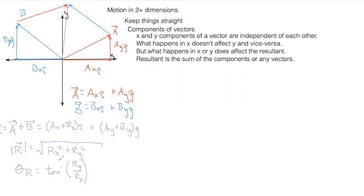The resultant is affected by both component X and component Y. But the X components are not affected by the Y components — the Y components stay with the Y components, the X components stay with the X components. They don't intermix with each other, so that's why they're independent.